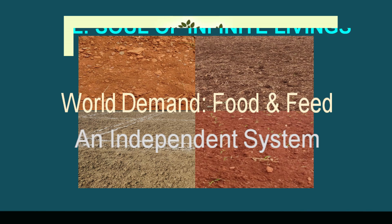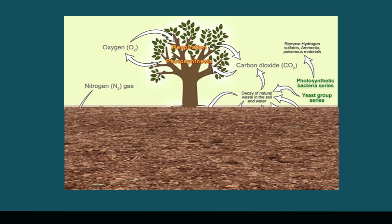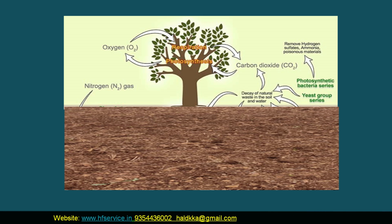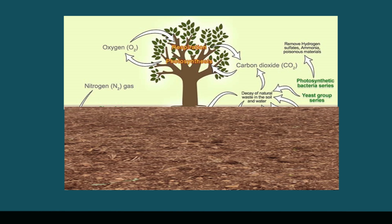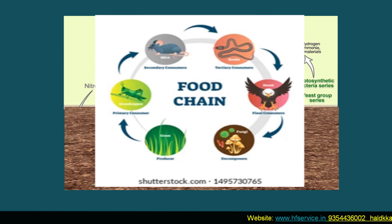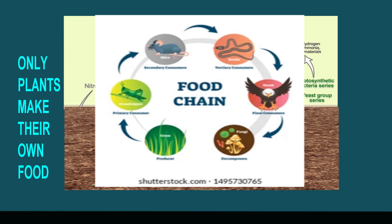And most importantly, it has its own system to do so. Let us assume this tree represents all the plants on this earth growing on a typical soil. We know that plants inhale oxygen and use carbon dioxide during photosynthesis to make their own food — and yes, this is the basic difference between plants and us. Plants make their own food while we completely depend on plants for our survival.